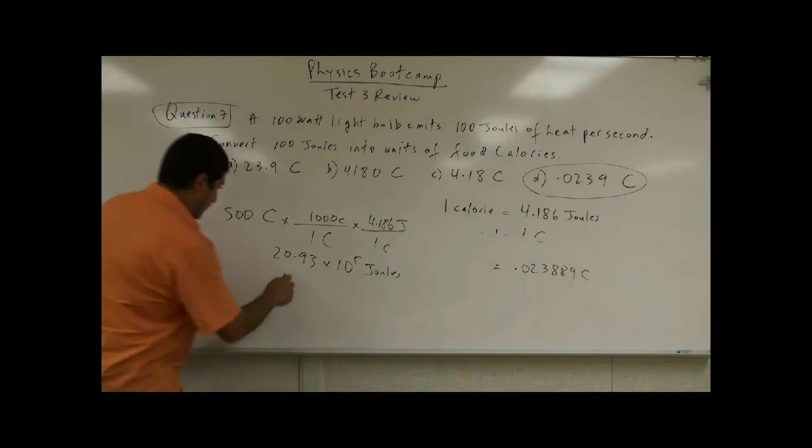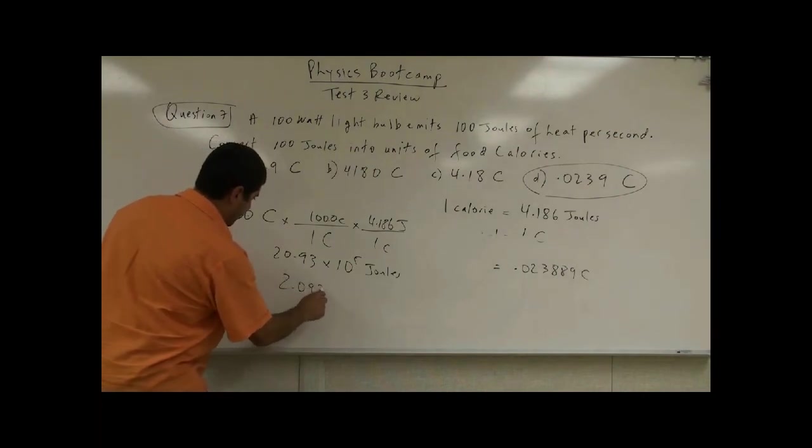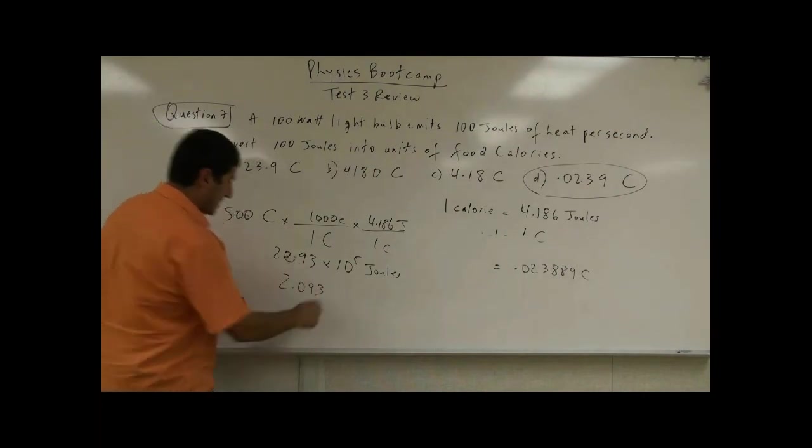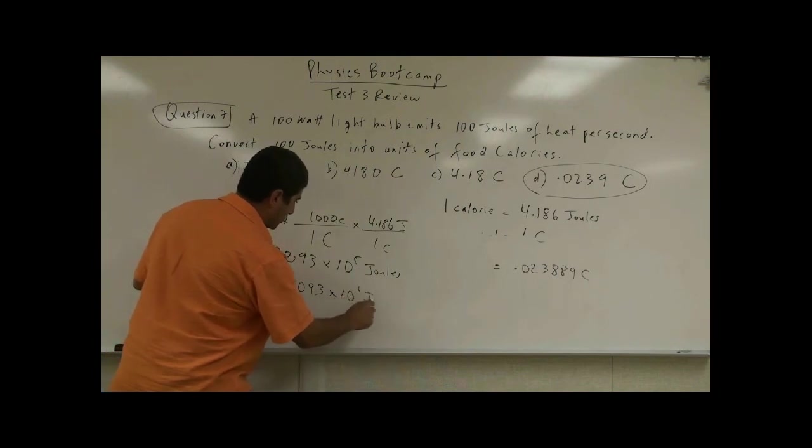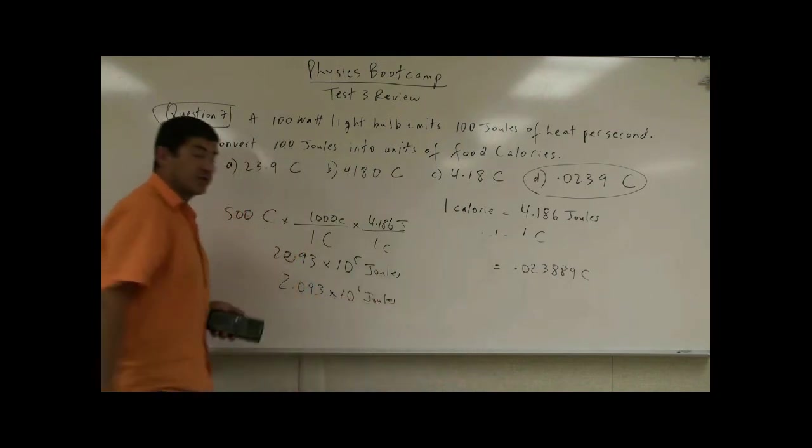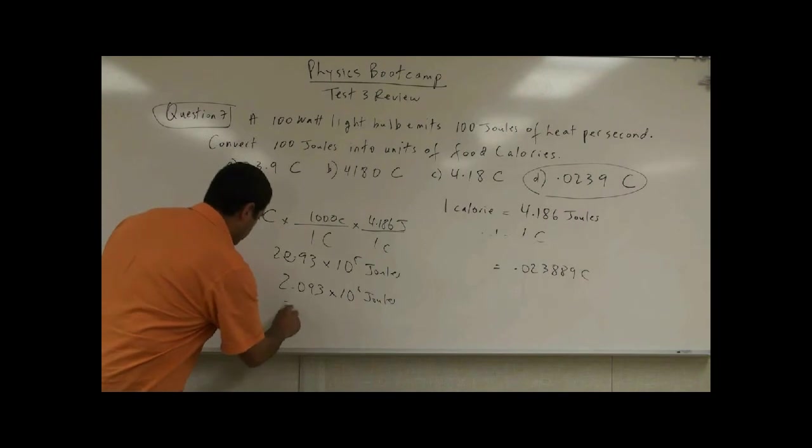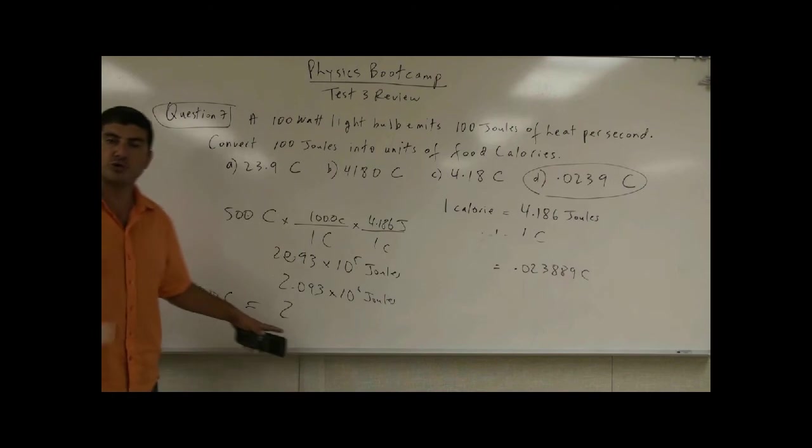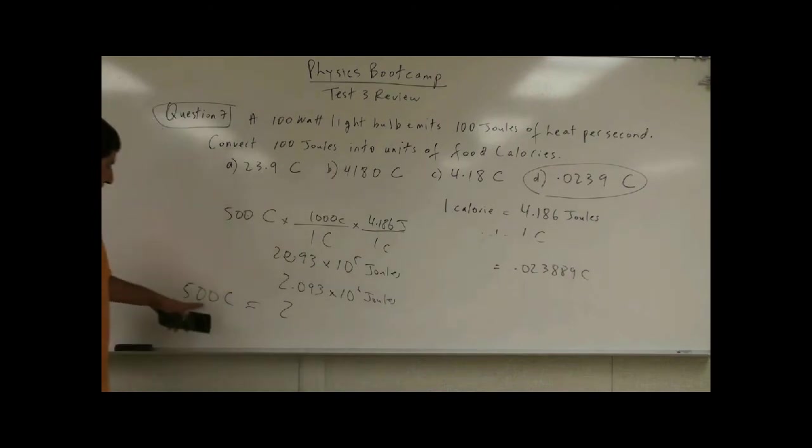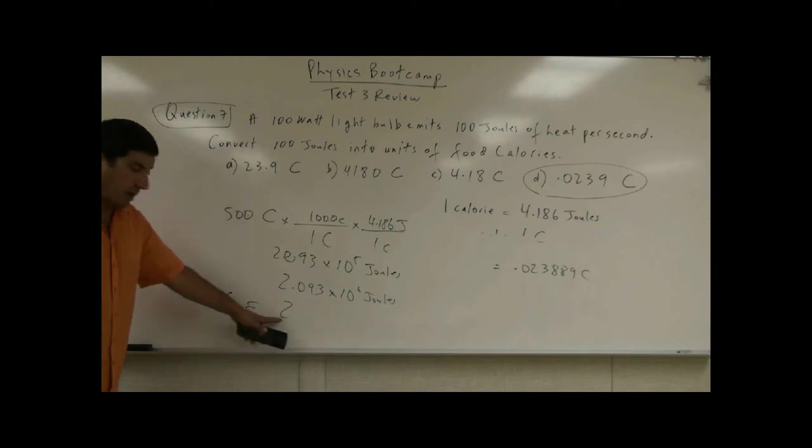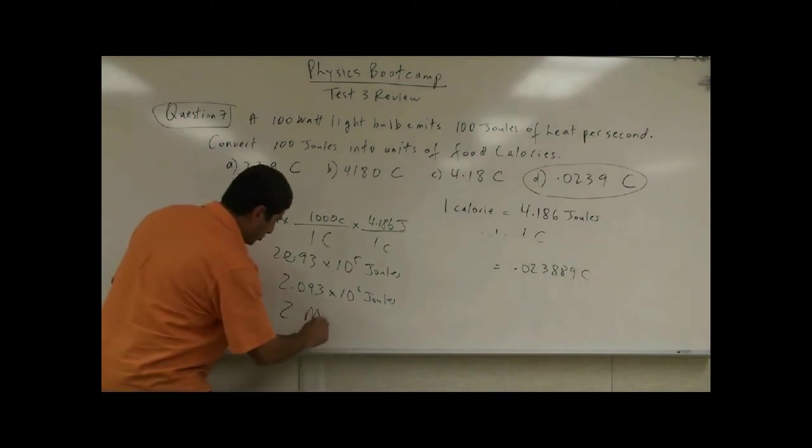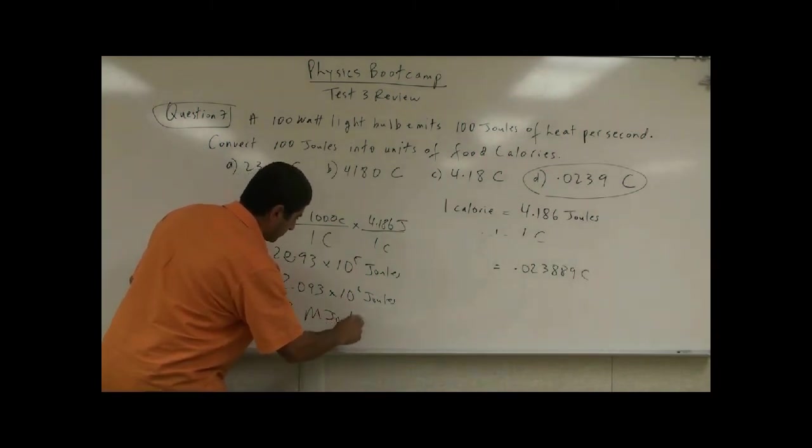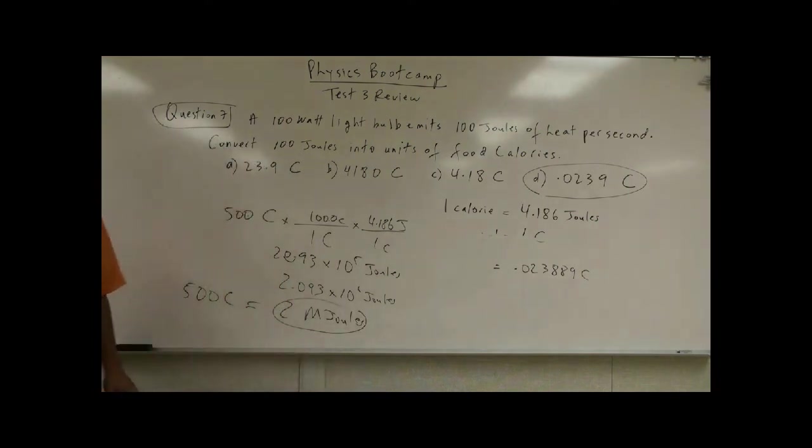And we could also convert that to 2.093 times 10 to the sixth joules, which is a million. So a 500 calorie food, remember it roughly this way. A hamburger, which is 500 calories, is approximately 2 megajoules of energy.